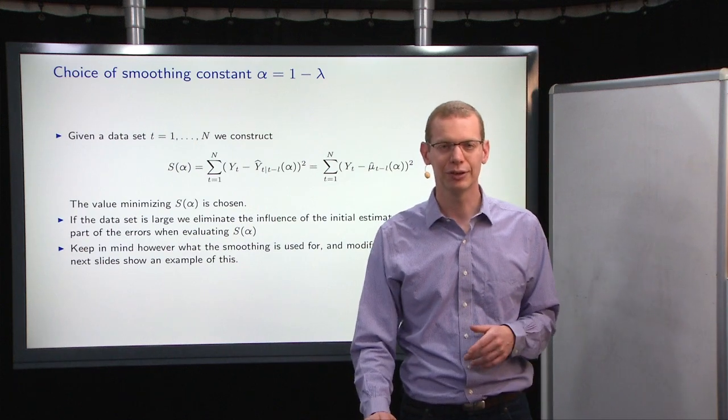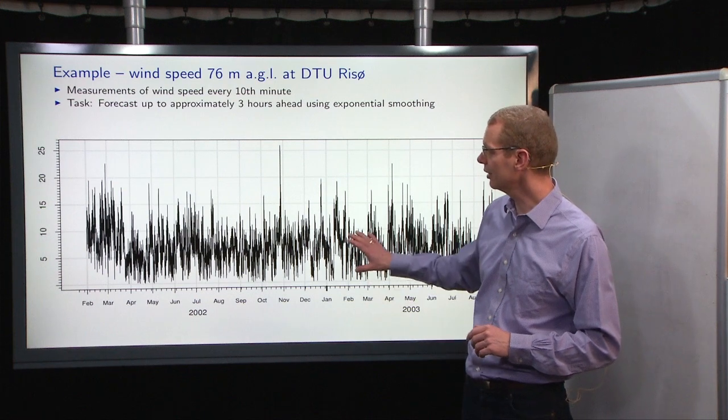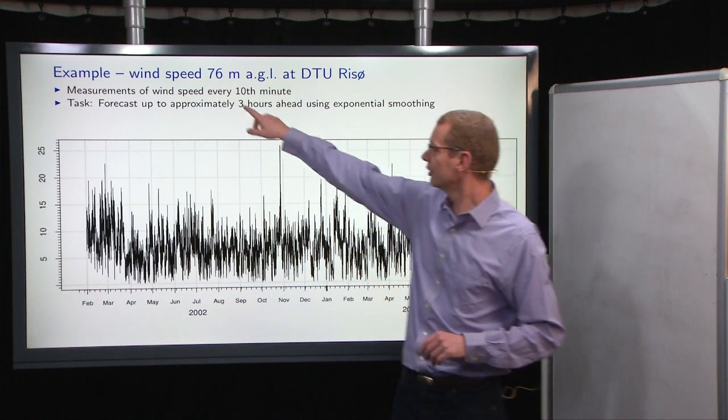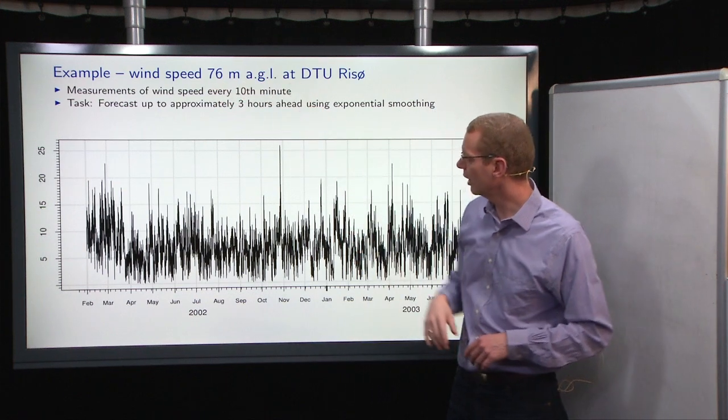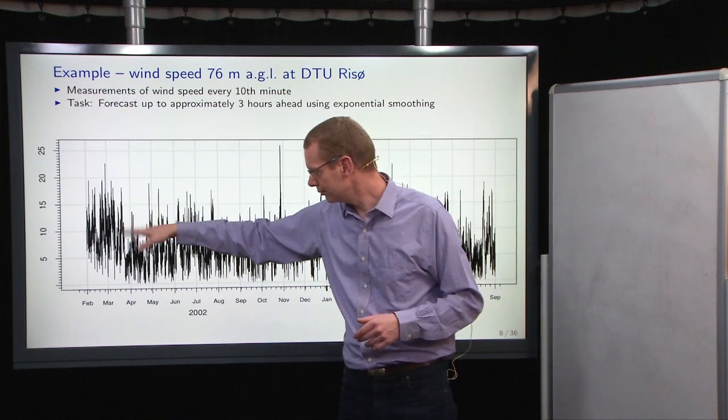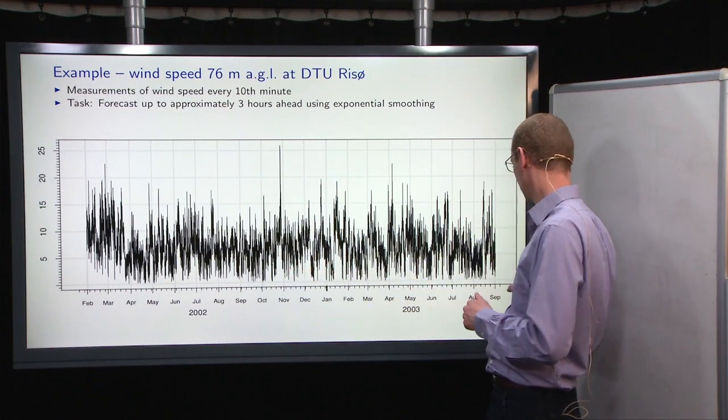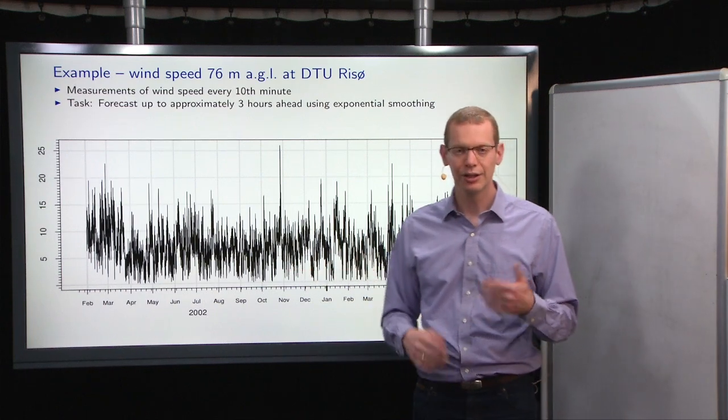I'll show you an example of this on the following slides. First, what I'll show you is some data for the wind speed, 76 meters above ground level at DCU Reto Campus. It's just a series of wind speeds here, covering a bit over a year, a year and a half.